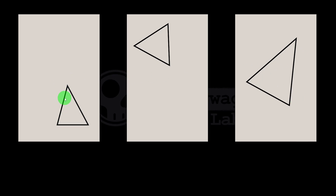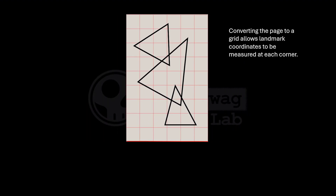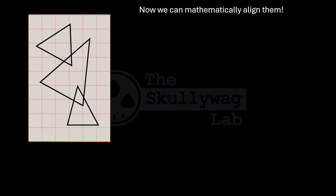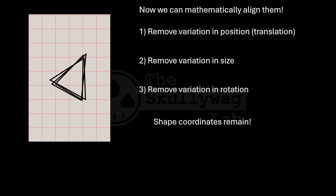Let's start with what I mean by shape. Imagine that you and two of your friends each draw a simple triangle on separate pieces of paper. Each drawing is a little bit different — one's bigger, another's tilted, and they're all in different spots on the page. But if we want to compare just their shapes, we need to remove their differences in size, position and rotation. We do this by converting each triangle into coordinates representing each corner, then aligning them mathematically. That's what we call shape in a mathematical sense — Cartesian coordinate data that is independent of size, rotation and translation. We call this process Procrustes superimposition.